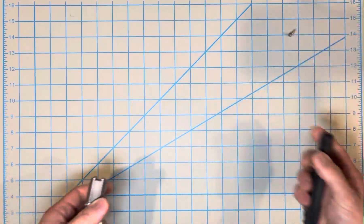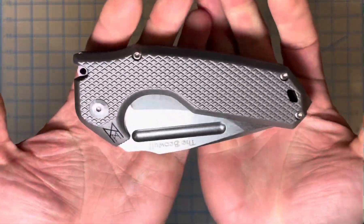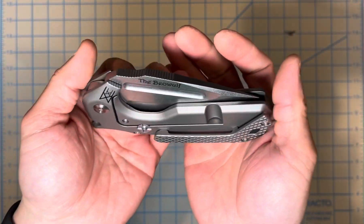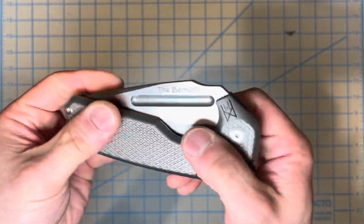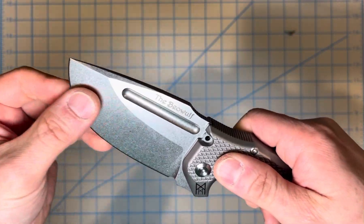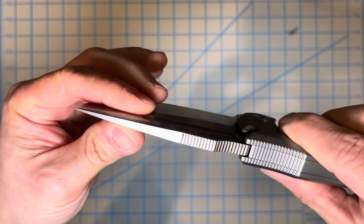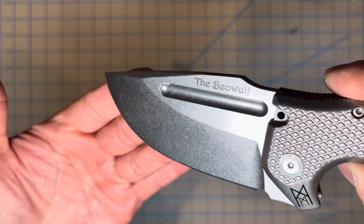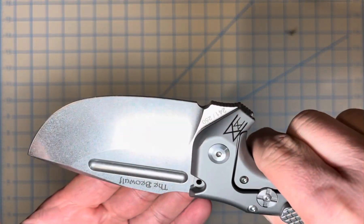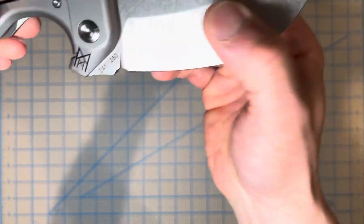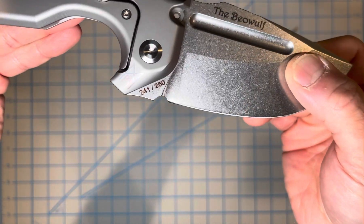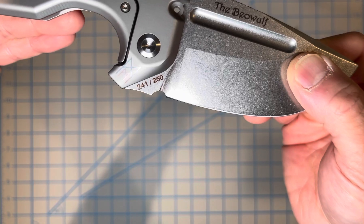It's really cool. The blade is CPM D2, so not regular D2. It is flat ground and it is in a stonewash which I do like. It looks like it is only made 250. They only made 250 of these and this is number 241.